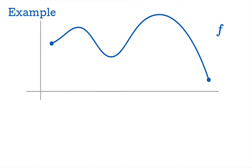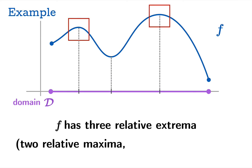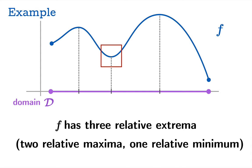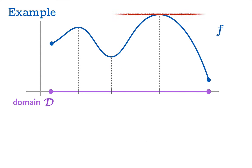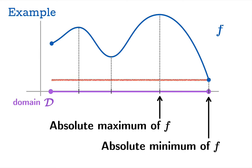Let's test drive all these definitions. Here's a function whose domain is a nice closed interval. There are three relative extrema: two relative maxima and one relative minimum. There is an absolute maximum occurring at one argument and an absolute minimum occurring at an endpoint. Endpoints can count for the purposes of absolute minima or maxima.